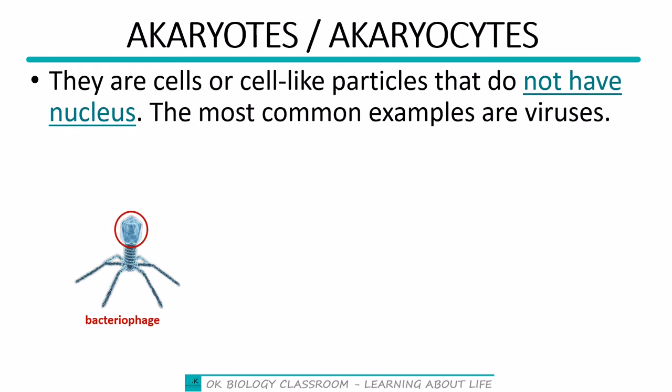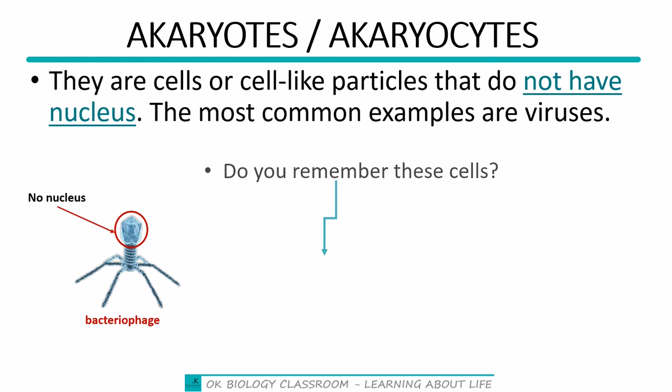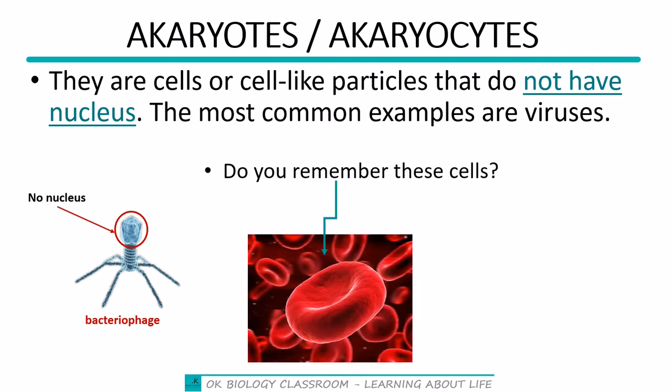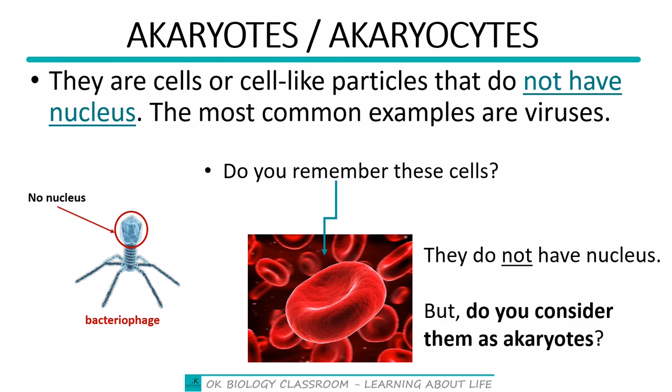When you examine the structure of this acaryote, you wouldn't find a nucleus anywhere, so it is an acaryote. There are also red blood cells, which do not have a nucleus. So the question is: would you consider them as acaryotes? You can leave your answer in the comment section before you proceed.